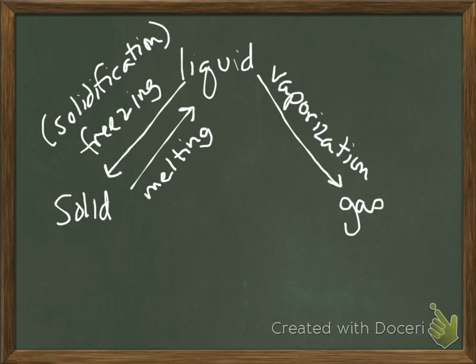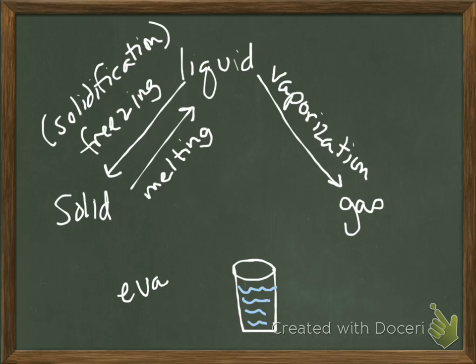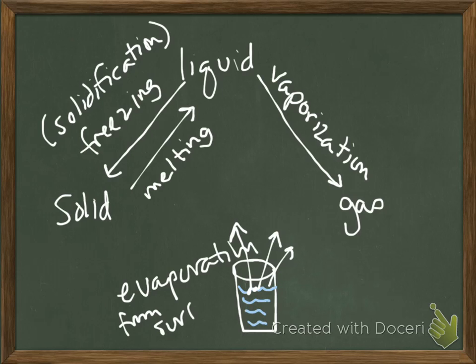When we go from a liquid to a gas, we call it vaporization, and there are two special cases. If you leave a glass of water out on the counter for a week or two, it evaporates. Evaporation is what happens when molecules from the surface of a liquid escape into the atmosphere — it's a relatively slow process, from the surface.